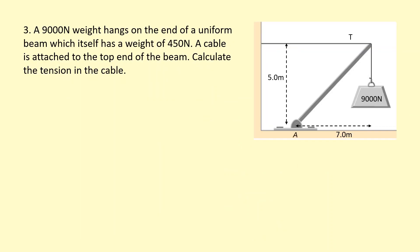In this example, we have a 9,000 newton weight hanging on the end of a uniform beam, which itself has a weight of 450 newtons. Because the beam is uniform, the 450 newton weight acts halfway along — if the total horizontal length is 7 meters, that's at 3.5 meters. There's also tension in the rope pulling the beam.